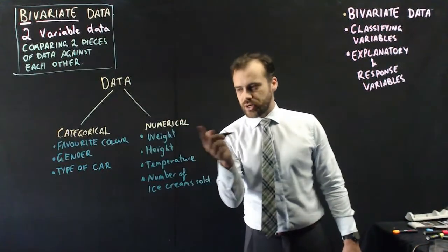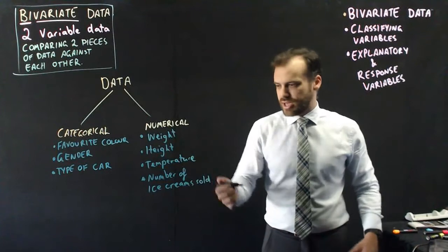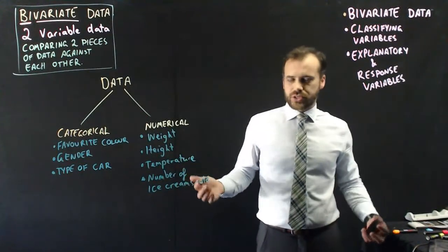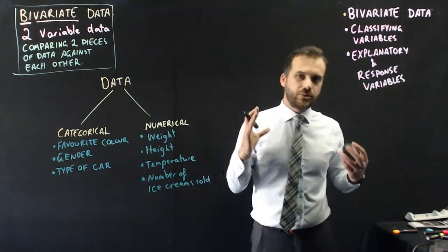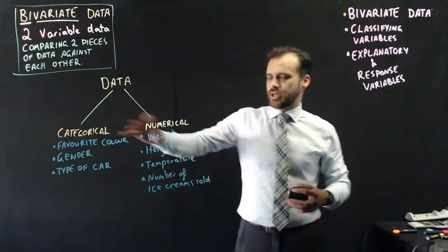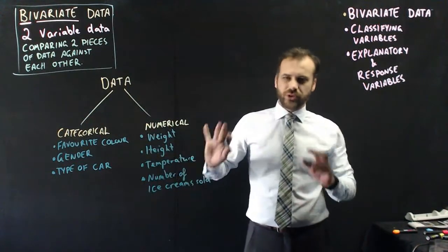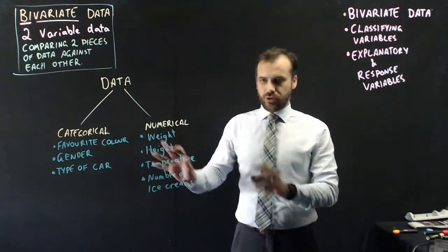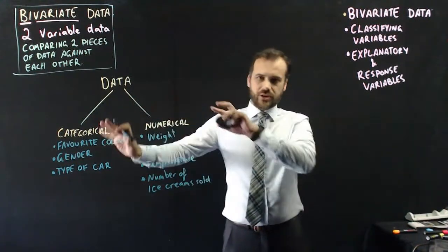Numerical, it could be things like weight, height, temperature today, or the number of ice creams sold. They can all be measured numerically. Now you know that you can break them up further - continuous, discrete, categorical could be ordinal and nominal - but I don't need to go into that right now. As long as we understand that there's categorical and numerical.